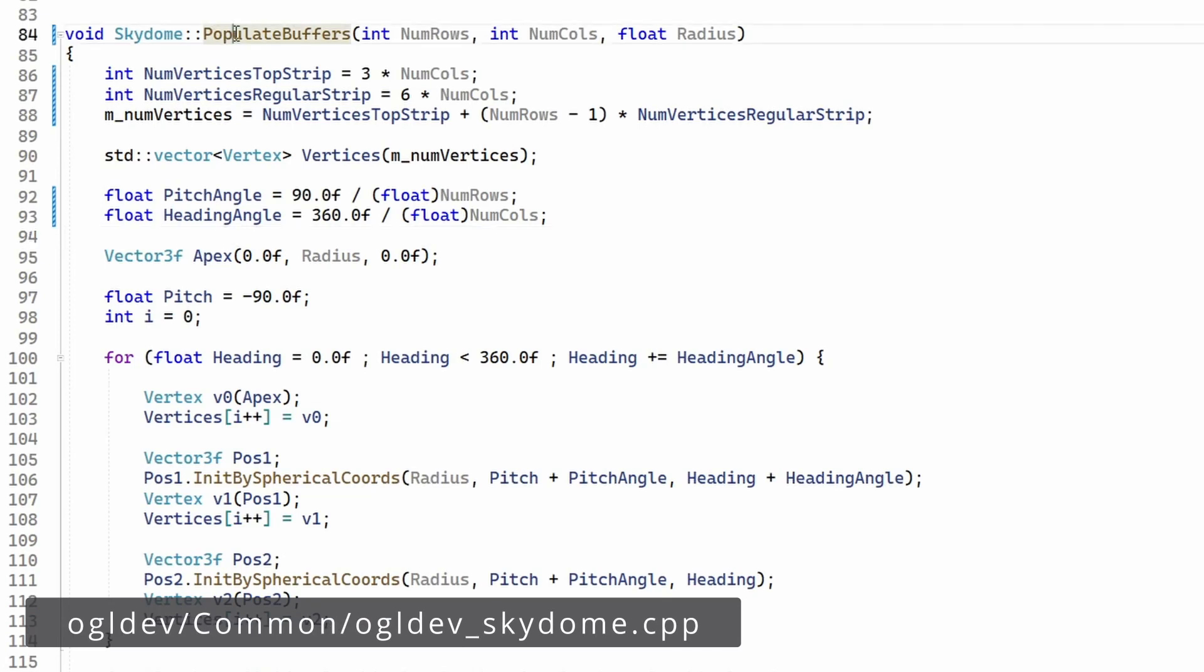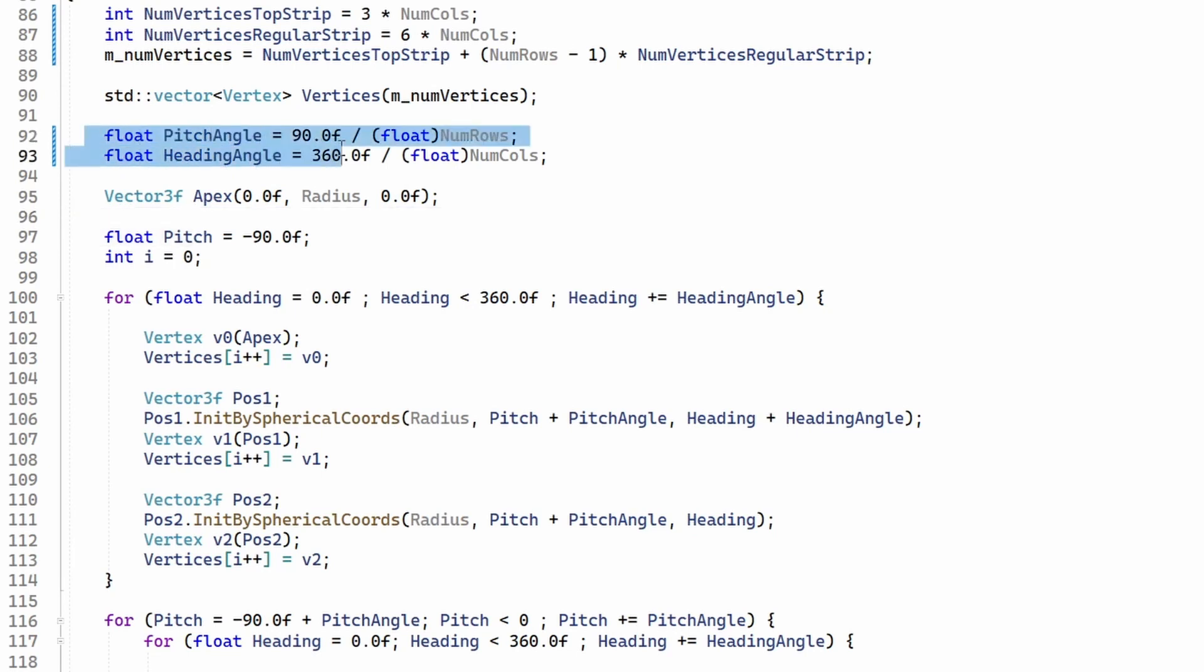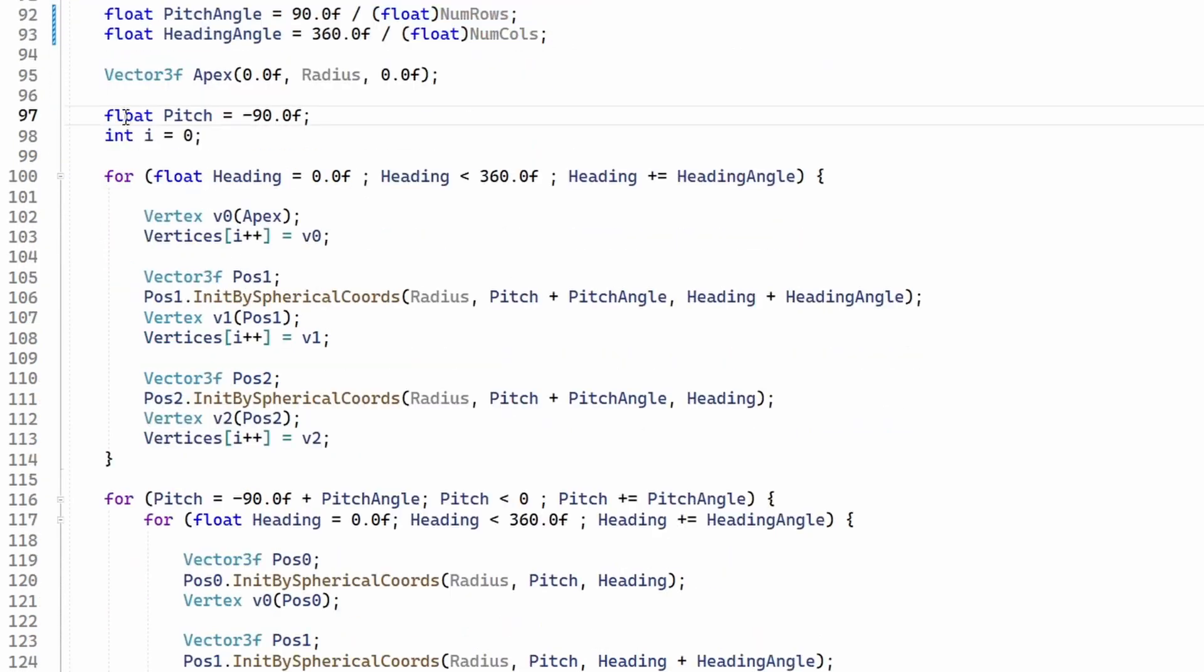Okay so this function populate_buffers of the sky dome class creates the actual sphere. It takes the number of rows, the number of columns and the radius as parameters. It starts by calculating the total number of vertices which we need in order to resize this vector which will eventually go into the vertex buffer. Next it calculates the two angles, the pitch and the heading.